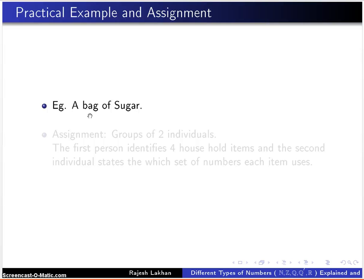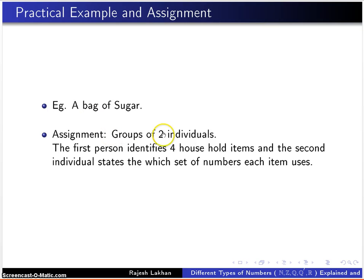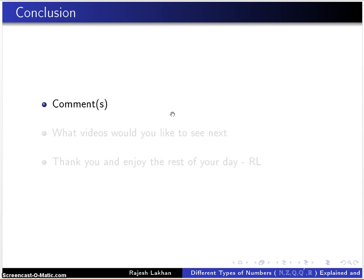Okay, so I have a mini assignment for you all. Please work in groups of two, and the first person has to identify four household items and the second individual has to state which types of numbers can be used in each case, just as I did with my bag of sugar example. So that said, I'd like to say I hope you enjoyed the video. Please feel free to leave your comments below. Let us know if there are any things you'd like to see us clear up in our next videos. So thank you very much. I hope you enjoy the rest of the day. This was Rajesh. Bye.